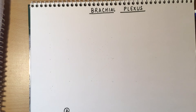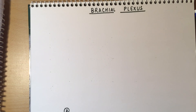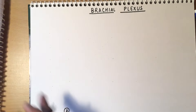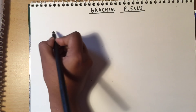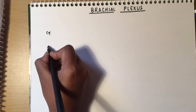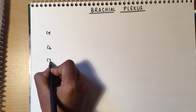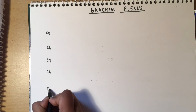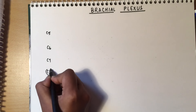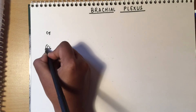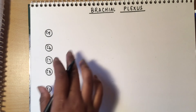Brachial plexus — 'plexus' just means a bunch of nerves. These nerves are present in our neck, in the posterior triangle of the neck. It includes branches from the C5 to the T1 vertebra, so that's the first thing we're going to draw: C5, C6, C7, C8, and T1 — these are the roots that contribute to the brachial plexus.